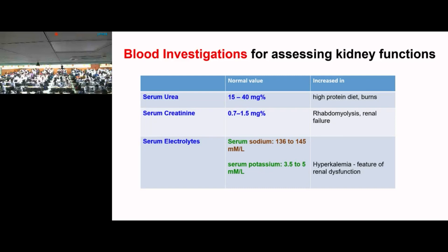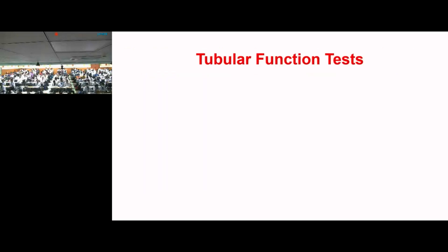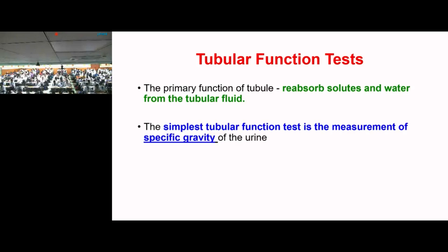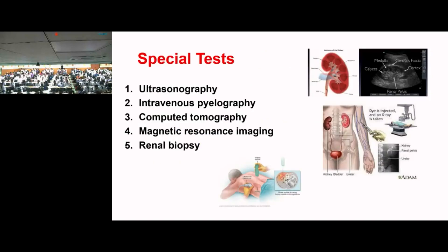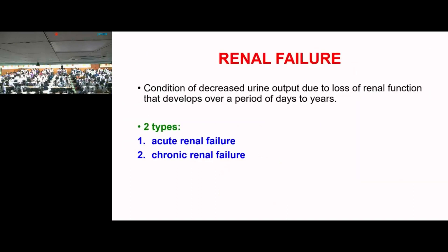Blood investigations for renal function include blood urea, blood creatinine, and serum electrolytes. For tubular function, the simple test is specific gravity of urine (normal: 1.010). Special tests include ultrasound, intravenous pyelography (injecting dyes), CT, MRI, and renal biopsy if malignancy is suspected.